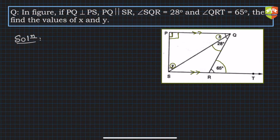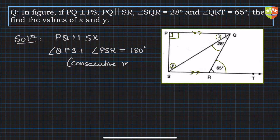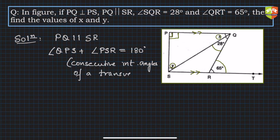Since PQ is parallel to SR, angle QPS plus angle PSR will be equal to 180 degrees. This is because of consecutive interior angles (co-interior angles) on a transversal. The transversal here is line PS, with PQ and SR as the parallel lines.